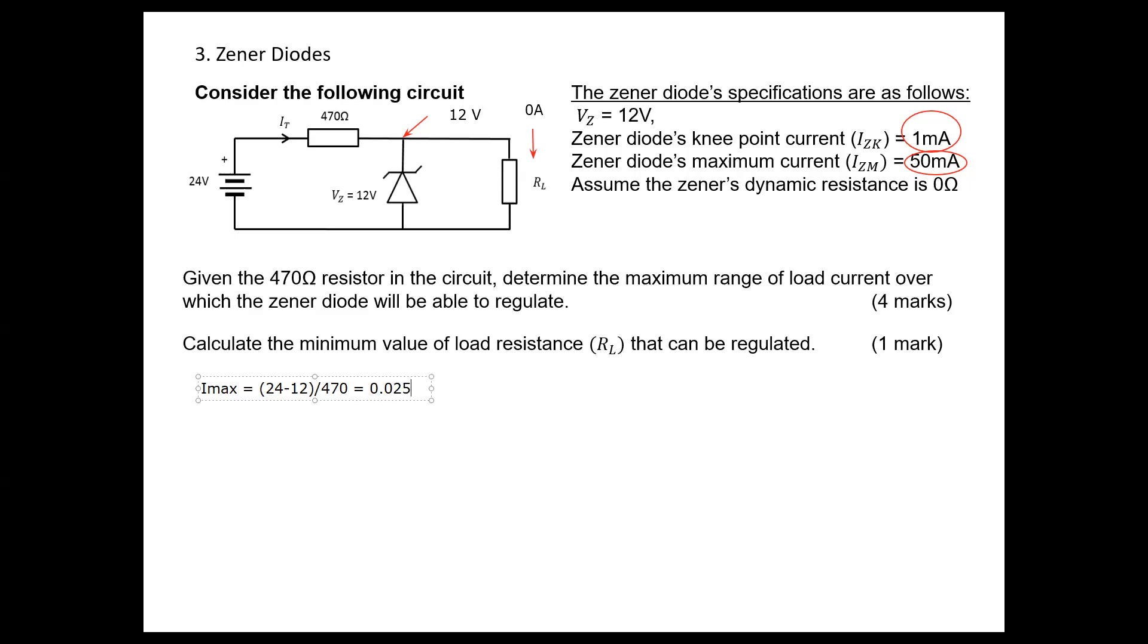0.0255 amperes, which is 25.5 milliamperes. This is less than the maximum current of the Zener, so we can regulate. Therefore, the minimum possible value for load current is zero ampere. Now we will find the maximum current.